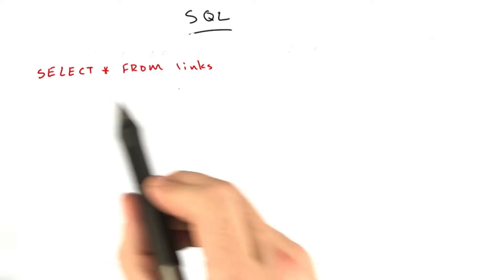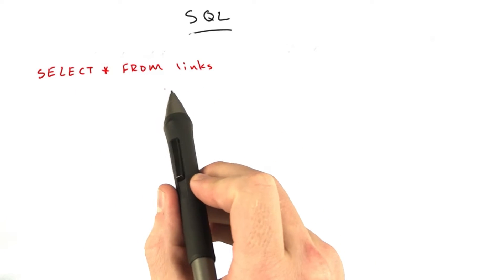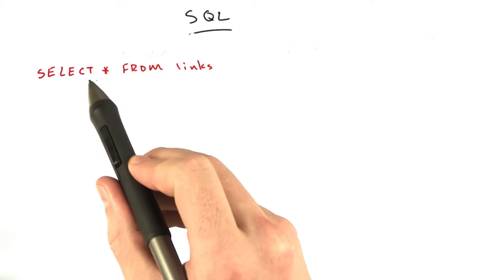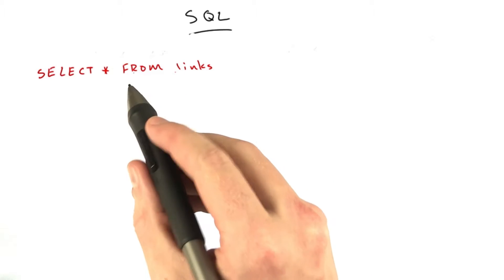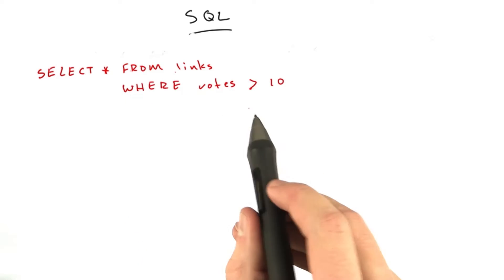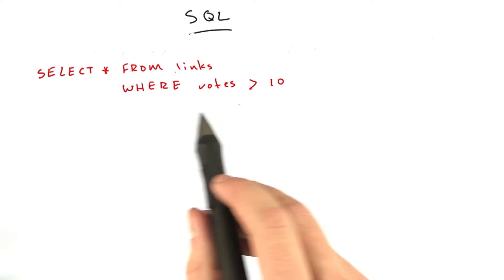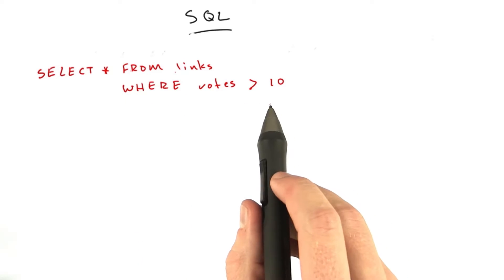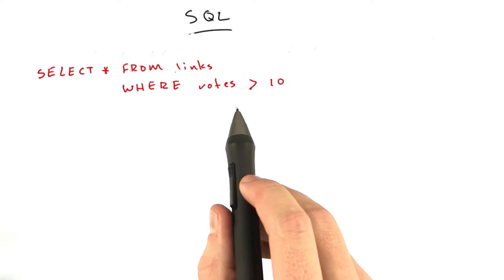Okay, so more SQL. Let's start with the basic statement we've been using so far: SELECT * FROM links. Let's add a WHERE clause — WHERE votes are greater than 10. That gives us only the links that have a few votes.